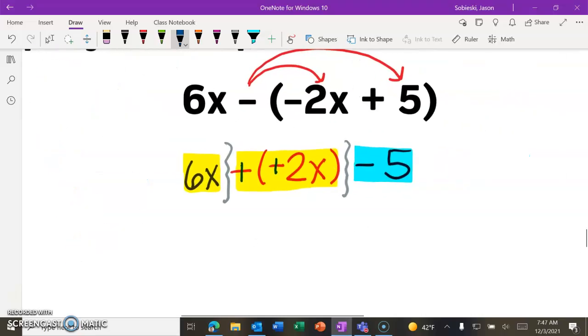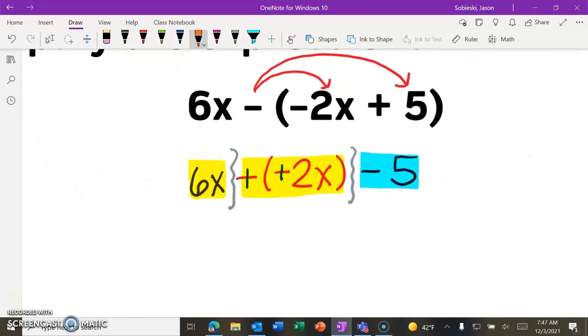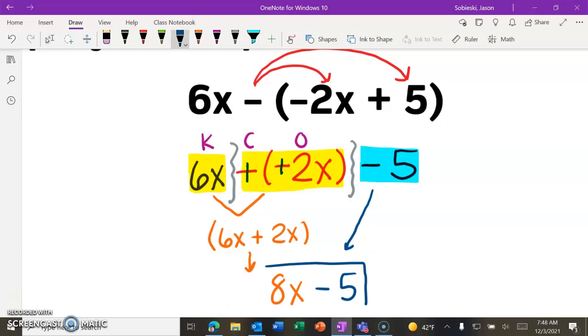All right, and then let's just finish off our second example here. So again, we'll start by combining our x terms. So we have 6x. Again, it was minus negative 2x. But if we do keep change opposite, we know that that's really just going to become 6x plus a positive 2x. Right? It's much easier, and then we can easily see that that's going to give us an 8x. And then same thing, no constant to combine, just the 1. So we're going to make it a minus 5. So our final simplified expression for this example is going to be 8x minus 5.